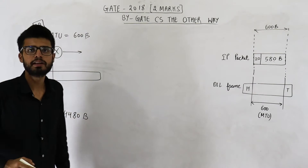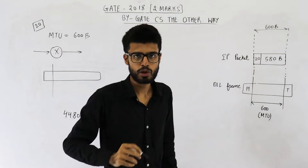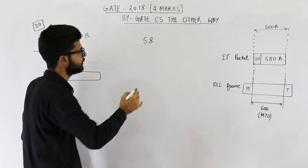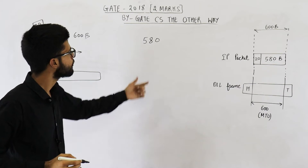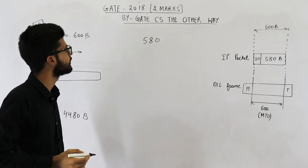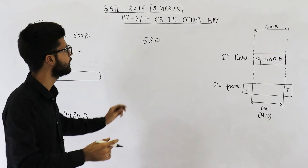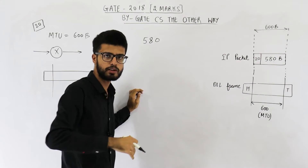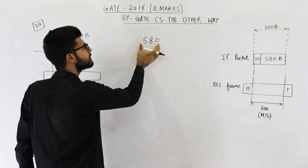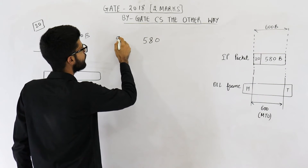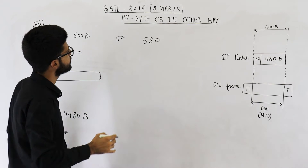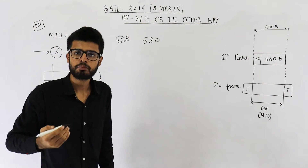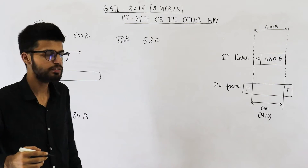This data exceeds the limit, so we need to fragment it into smaller parts. The maximum allowed size is 580 bytes, but there is one more limitation: the size of all fragments except the last must be divisible by 8. Is 580 divisible by 8? No — dividing gives a remainder. So we need to reduce the fragment size. The largest number smaller than 580 that is divisible by 8 is 576. So we take the size of one fragment as 576 bytes.